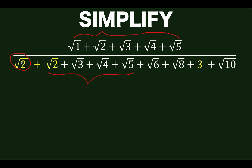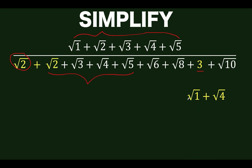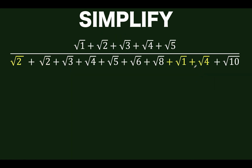So how can we get a square root of 1 here? We can get that from this 3. We can write that 3 as 1 plus 2. And we can write this 1 as square root of 1 and this 2 as square root of 4, because square root of 4 is equal to 2. So let's remove this 1 plus 2 and insert square root of 1 plus square root of 4 in place of this 3.